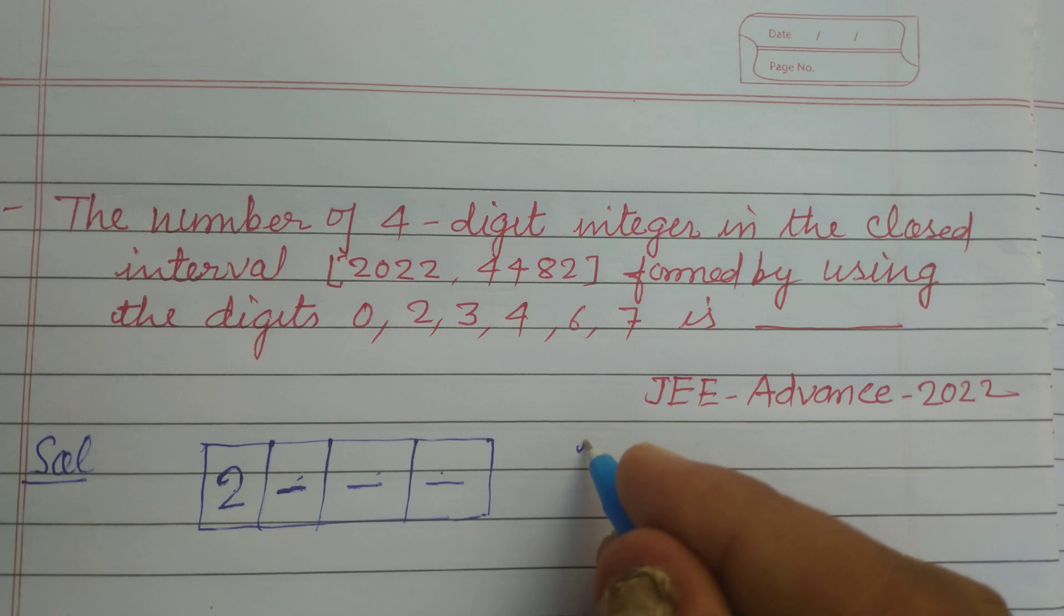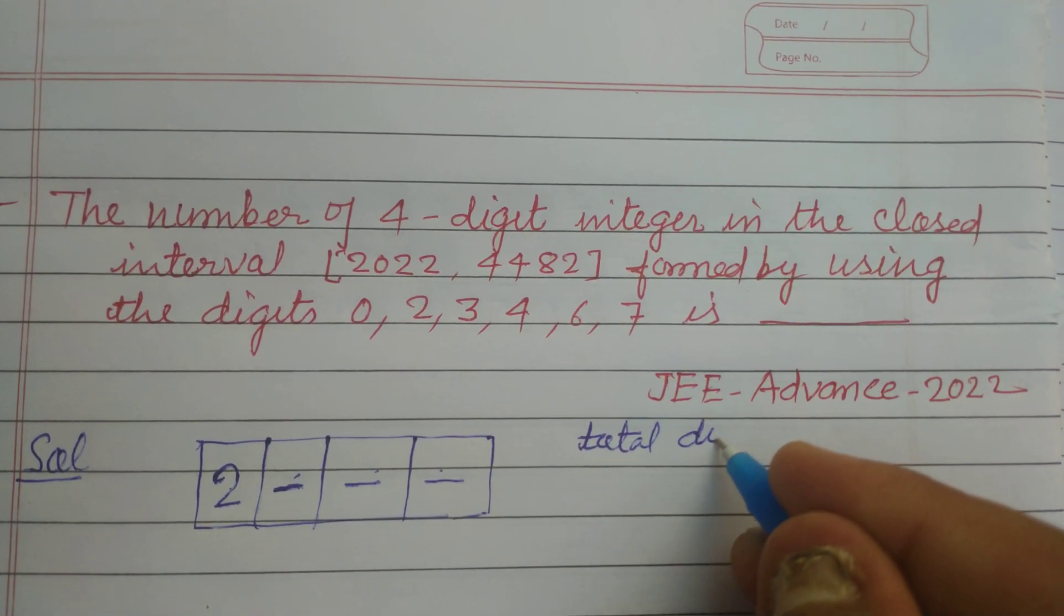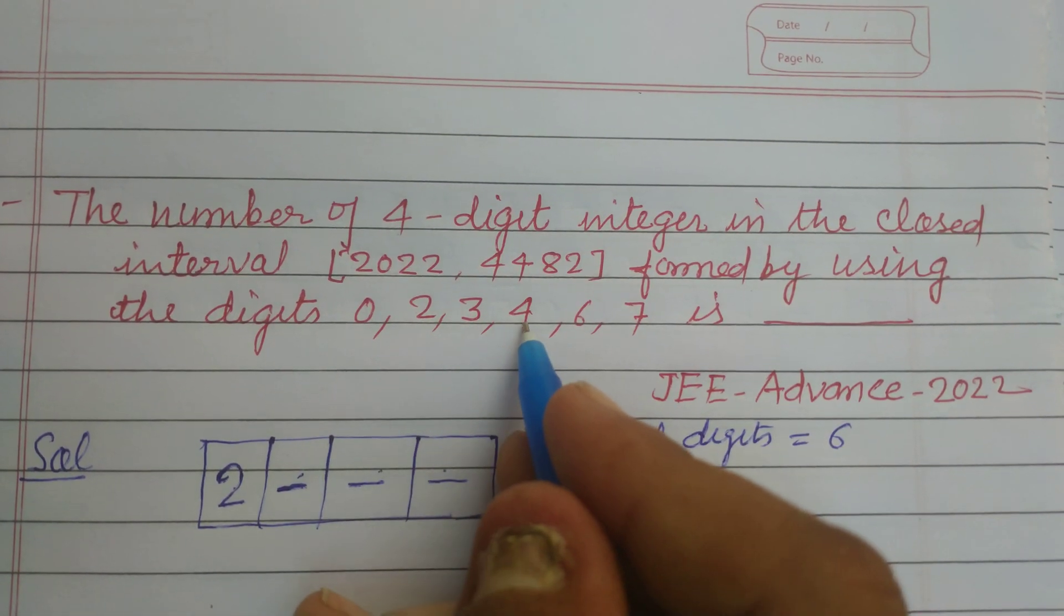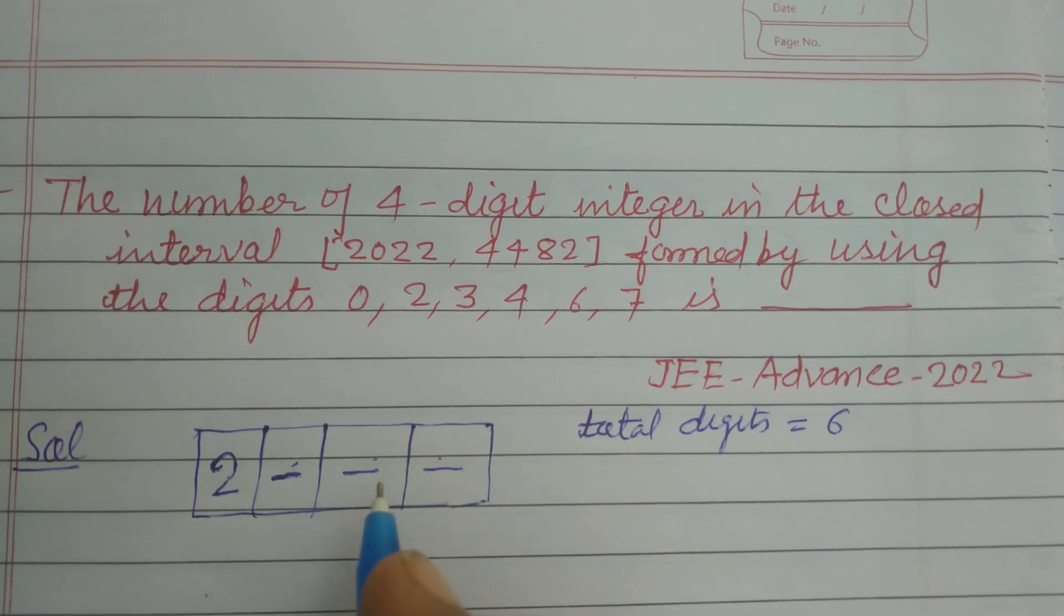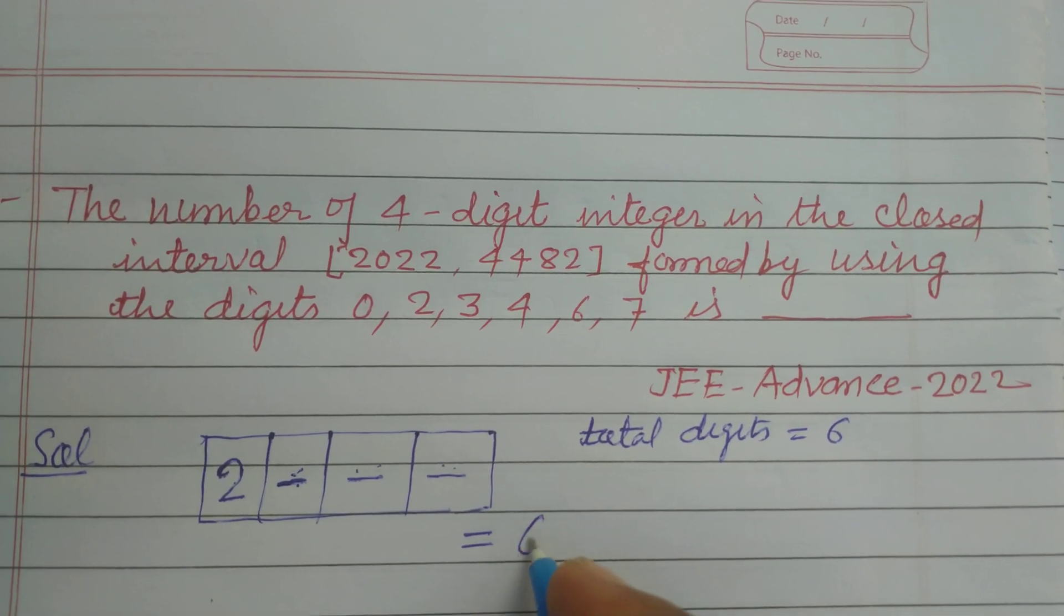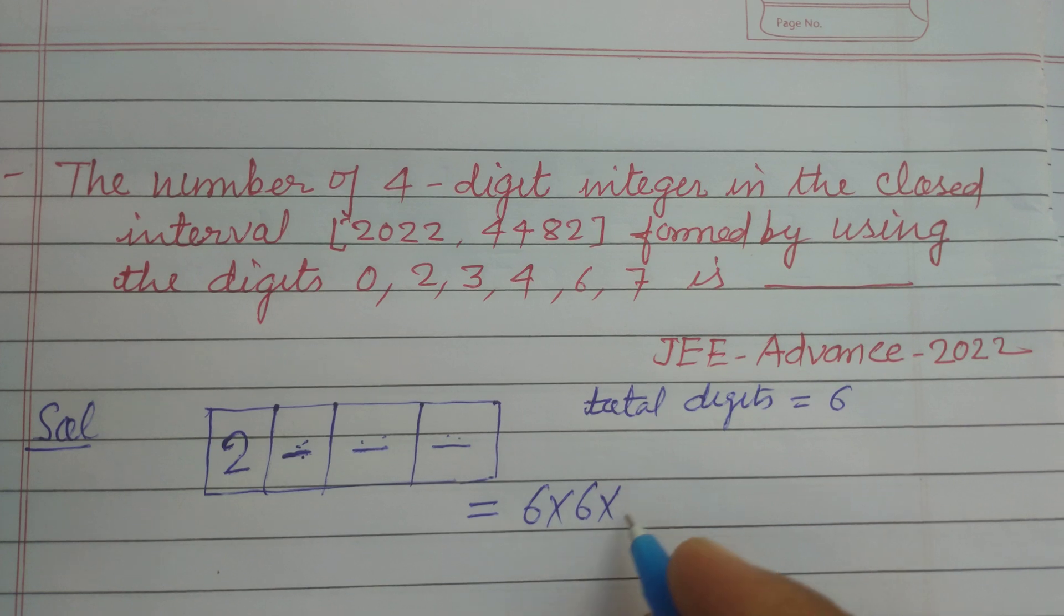Total digits are 6: 1, 2, 3, 4, 5, 6. So these 3 vacant can be filled by 6, 6, 6 ways. 6 into 6 into 6 ways.